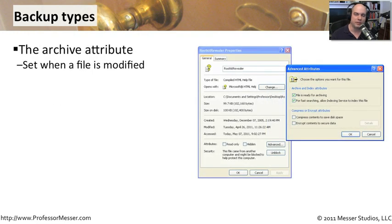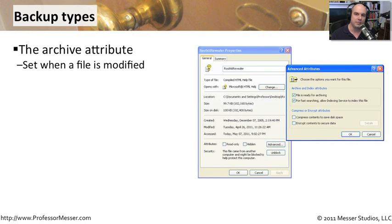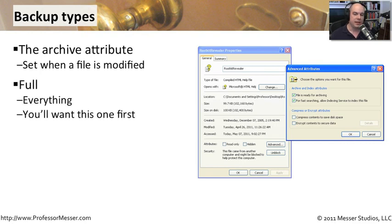If you've ever looked at the properties of a file in Windows, there are different attributes associated with the file — read-only, hidden, and for the purposes of backing up files, there is an archive bit that can be set. That archive bit is used depending on the type of backup being performed. If you ever modify a file, that bit becomes set. Backup programs look at every file that has that particular check mark. If you're doing a full backup, you're going to copy everything on your system whether it has a check mark or not, and you'll have that full and complete backup ready to go.